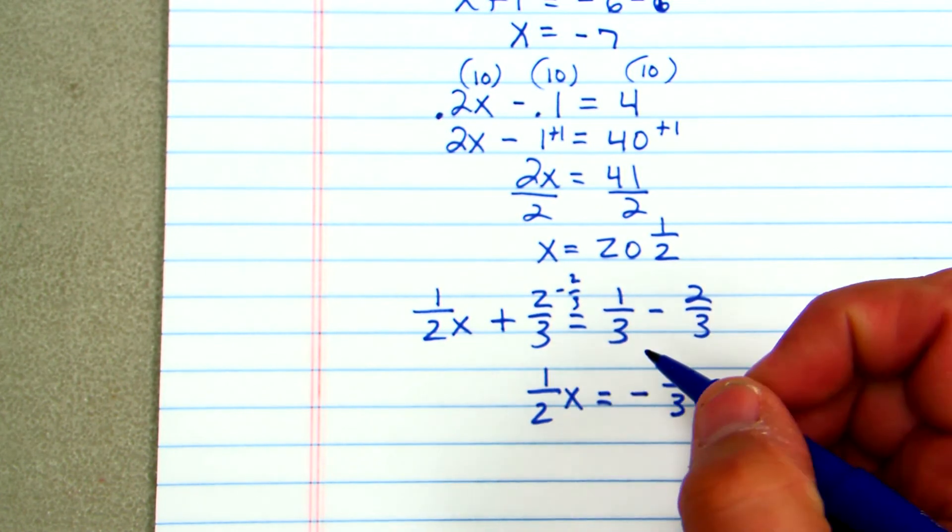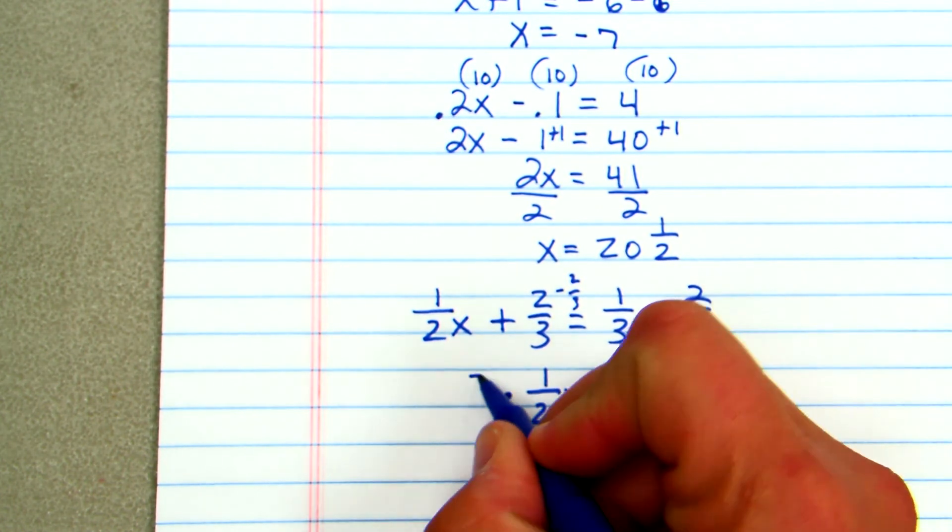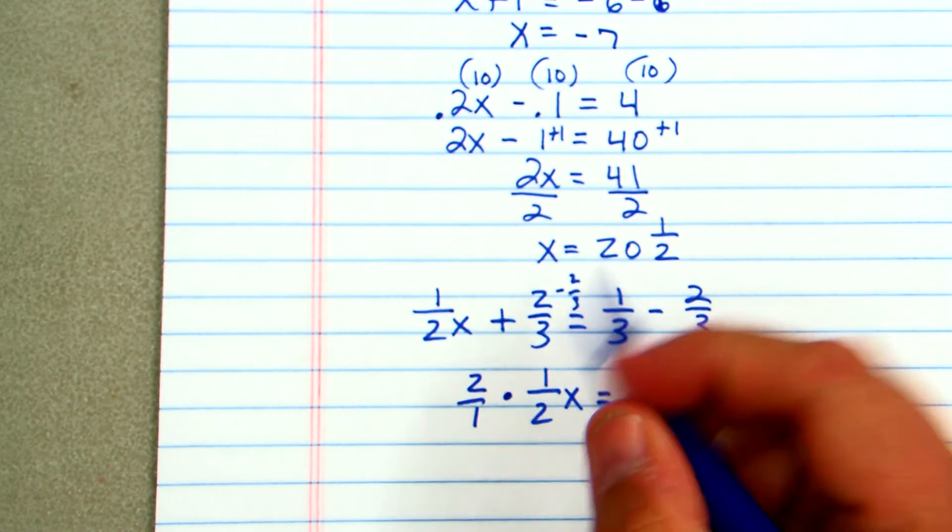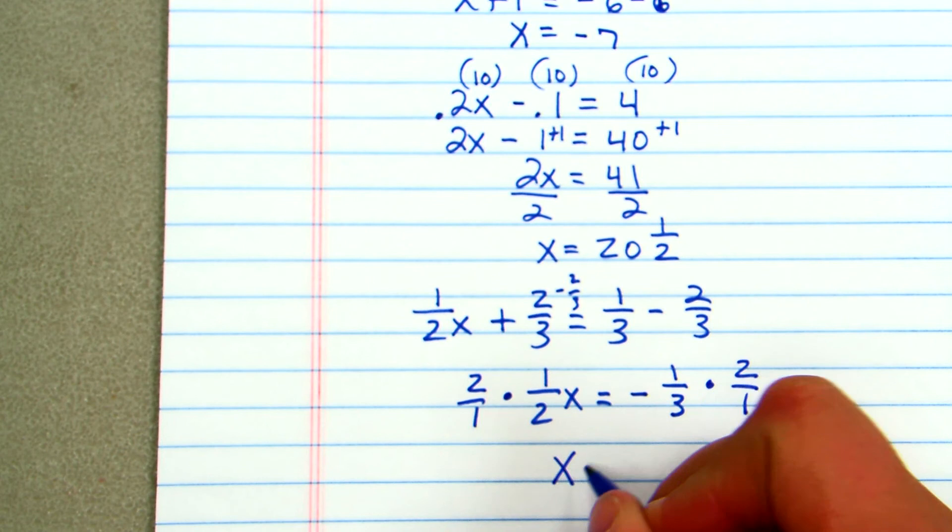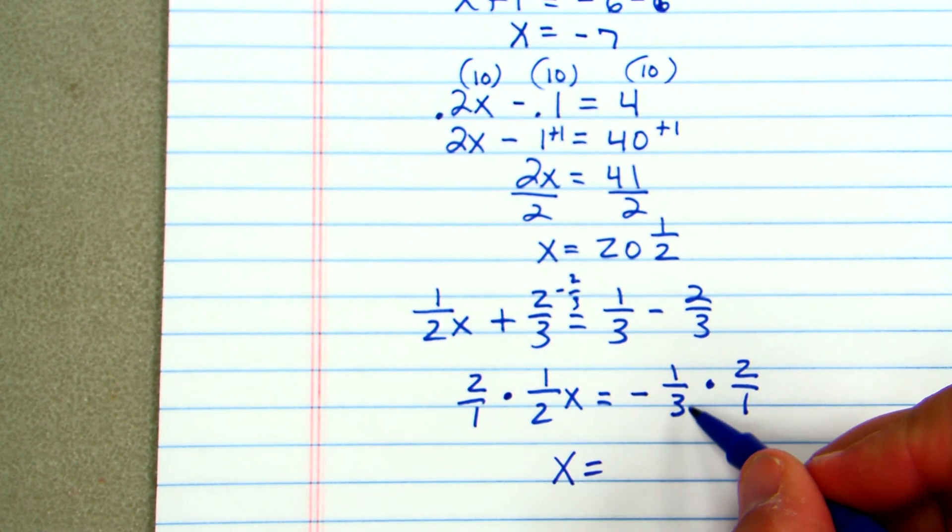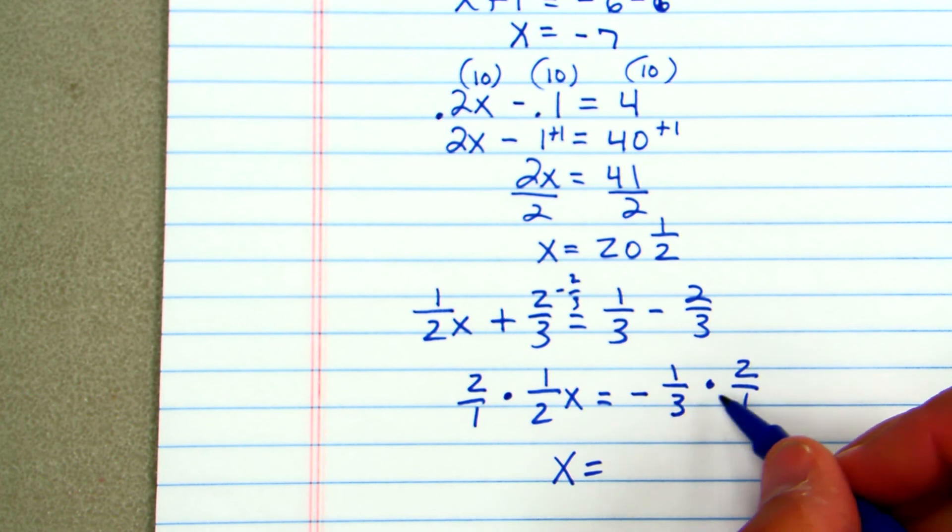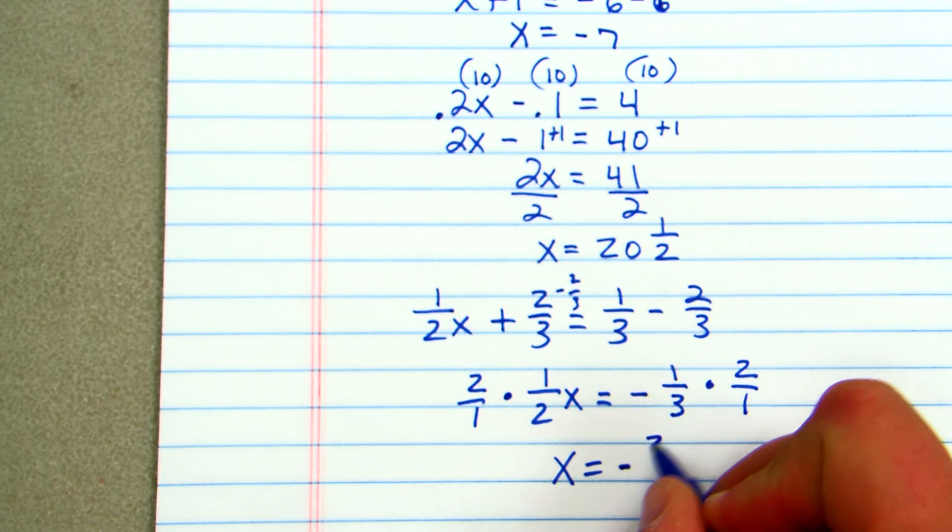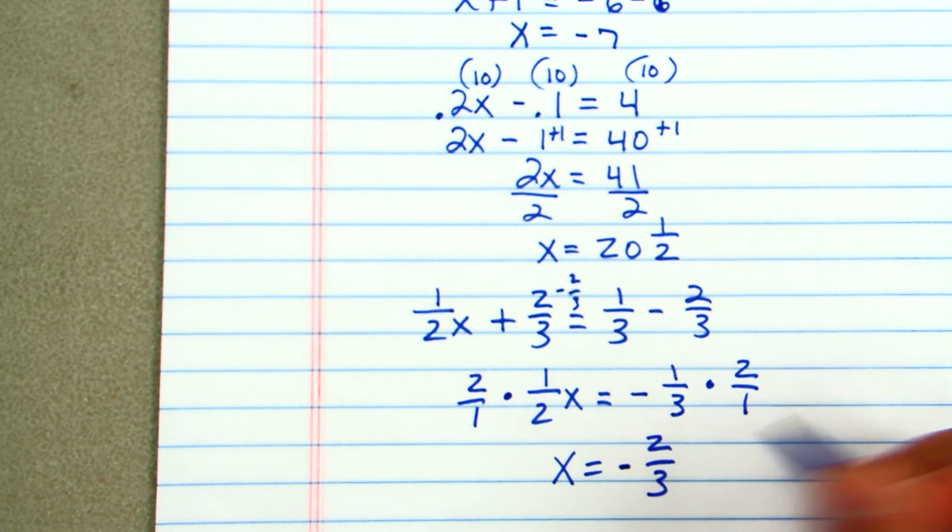So I'll say times 2 over 1, and this will be times 2 over 1. So that will cancel and leave me with x equals negative 1 third times 2 over 1. Check to see if you can cross multiply. We can't. So my answer will be x equals negative 2 thirds. And that is our answer for that equation.